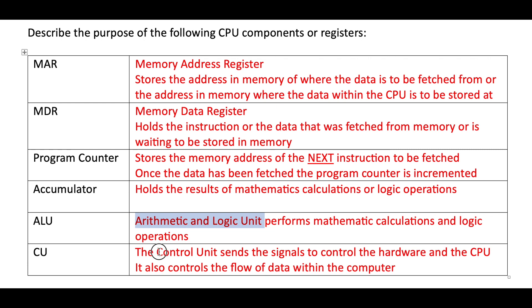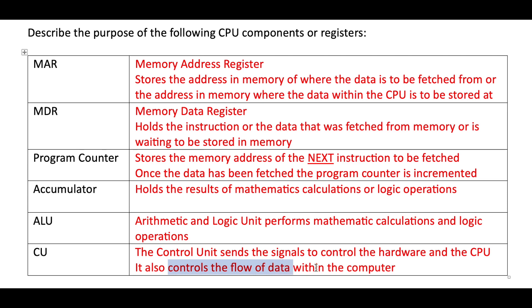The Control Unit can be seen as a traffic light system. It controls the flow of data around the computer system, enabling and disabling pieces of hardware, which ultimately controls the flow of data within the computer system itself.